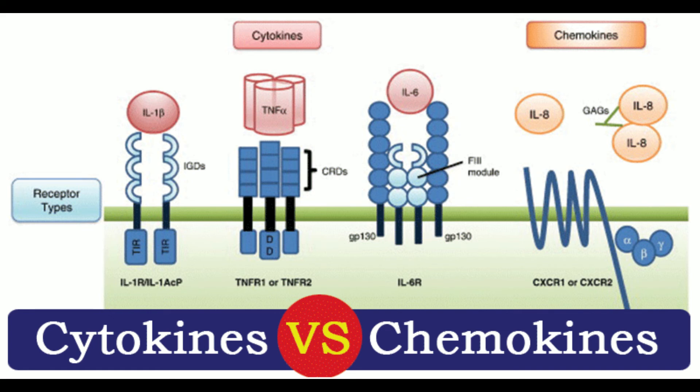8. Examples: Cytokines include IL-16, IL-12, IFN-α, TNF-α, IFN-γ, etc. Chemokine examples include Monocyte Chemoattractant Protein 1 (MCP1 or CCL2), CCL1, and CCL15.